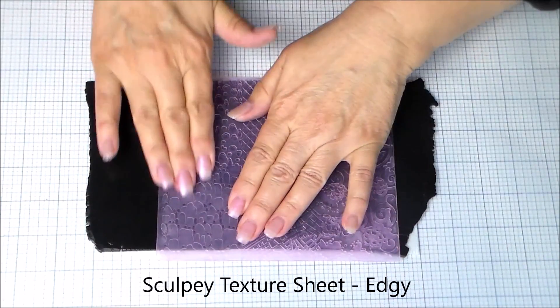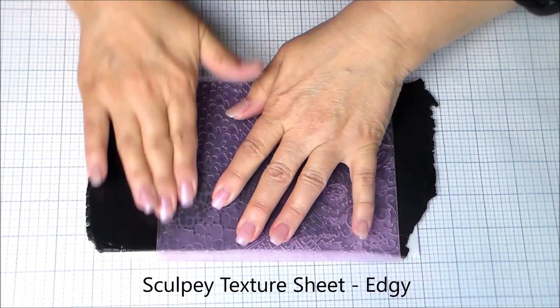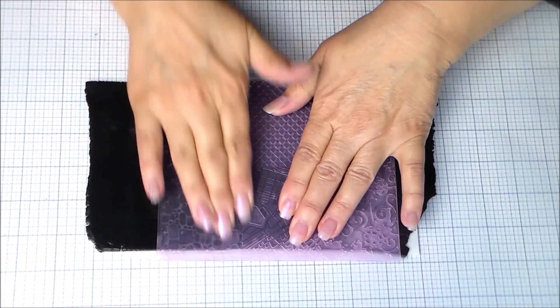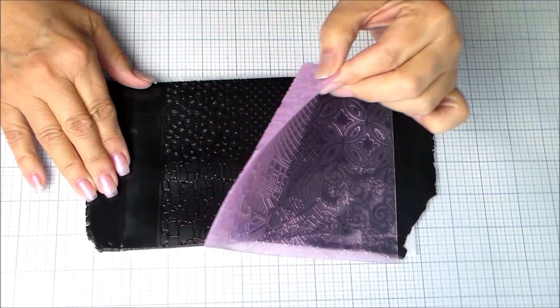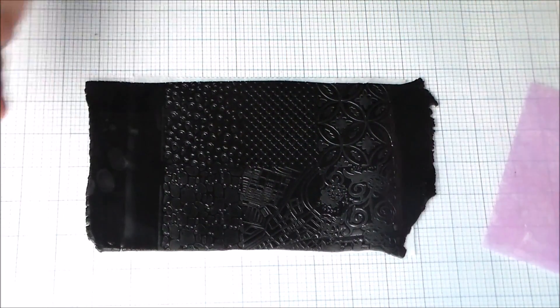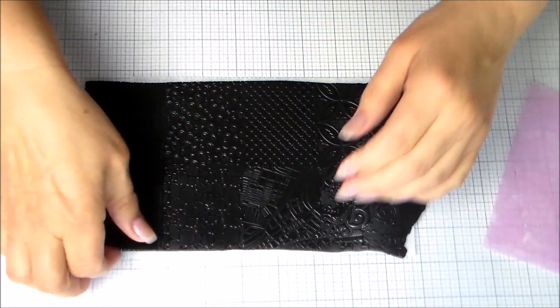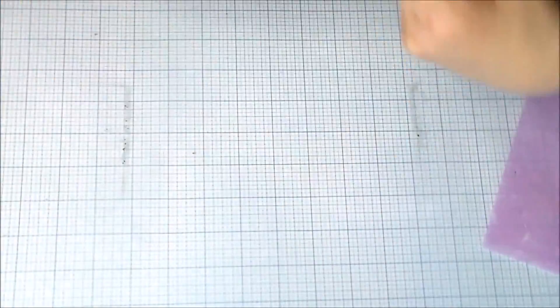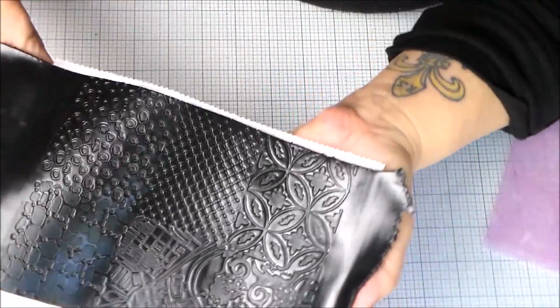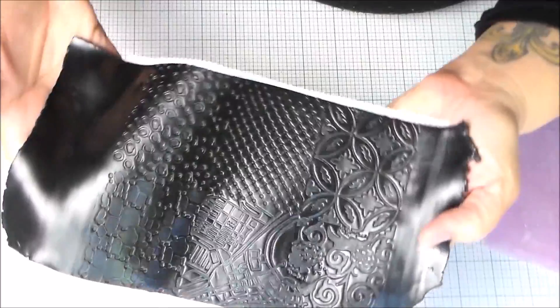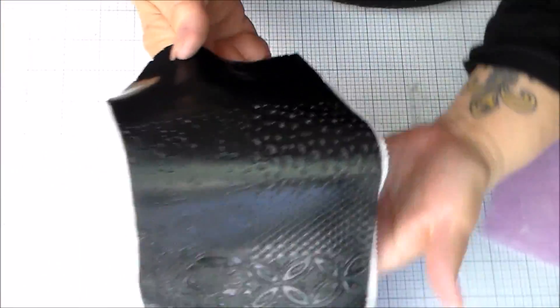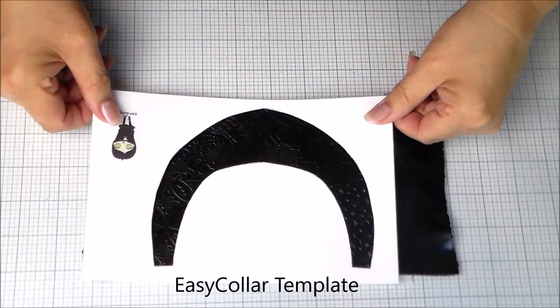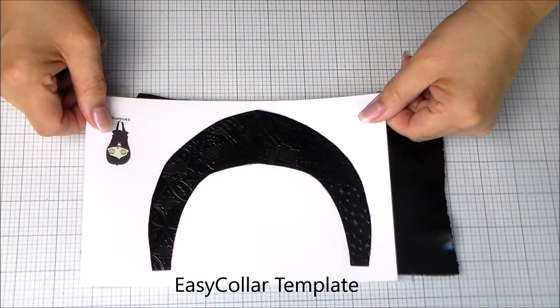So I'm using this Sculpey Texture Sheet in the Edgy Collection, and I'm just making sure I have a real good impression on my sheet of clay. You see I have excess there. And I'm going to pull that off, and it's got a really nice pattern. That's going to go on the inside of the necklace. So I'm going to cut that out with my Easy Collar template. But see, that's a really neat texture, I think. It's really different.